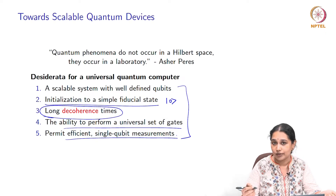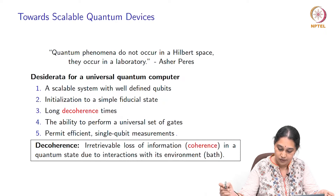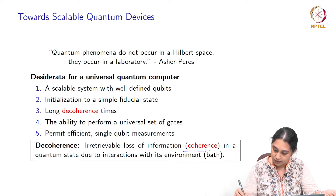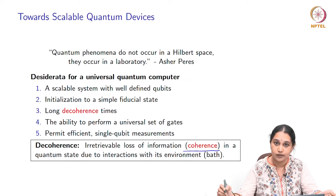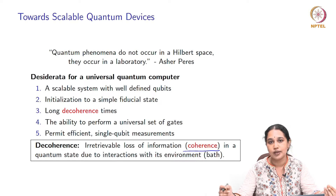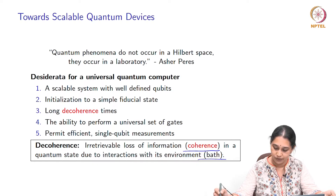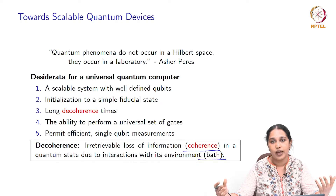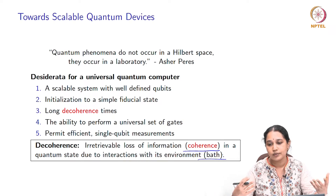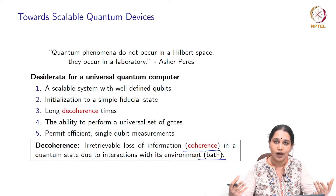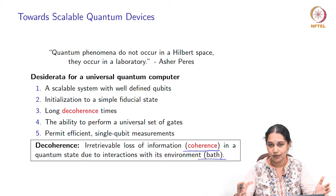So what is this issue of decoherence? Decoherence refers to irretrievable loss of information, or to be more technical, the loss of coherence in a quantum system due to interactions with its environment, which is also often referred to as the bath. The idea is that the quantum systems that we would like to build as qubits are not isolated systems in practice.